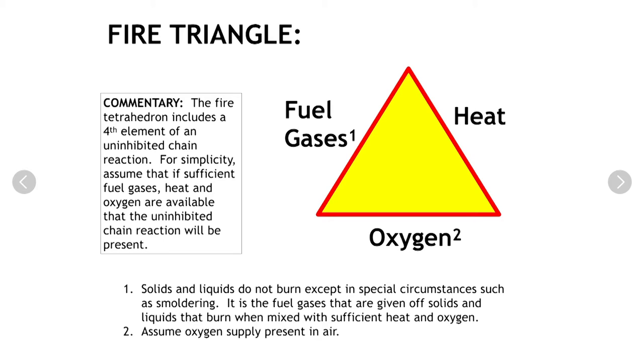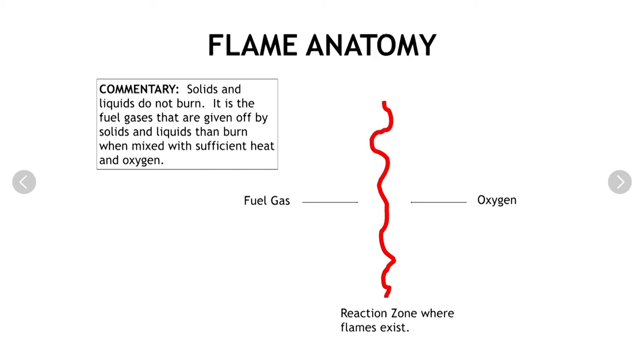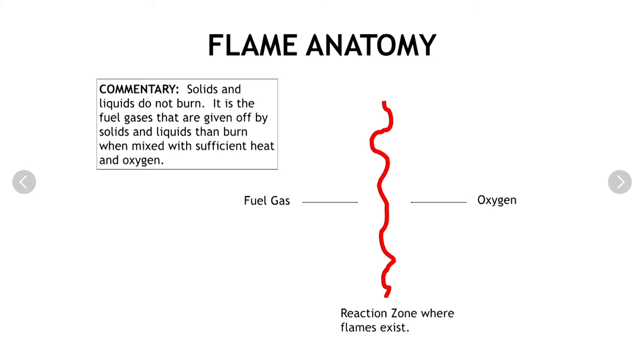The oxygen component of the fire triangle is typically coming from the oxygen present in our ambient air. Flames exist generally where there is an interface of fuel gases and oxygen, assuming there's enough heat present in the system. If you think about a fire plume that exists outside a window, that's an illustration of this interface — heated fuel gases escaping a fire compartment interface with oxygen outside and then burn. This dictates where flames are going to exist inside a compartment as well as outside.